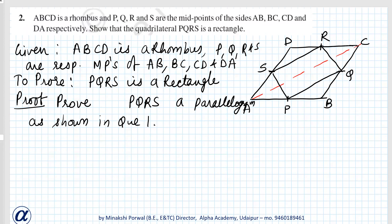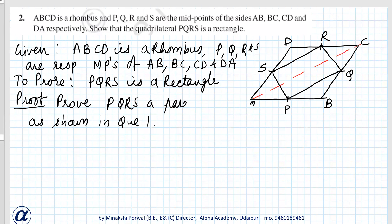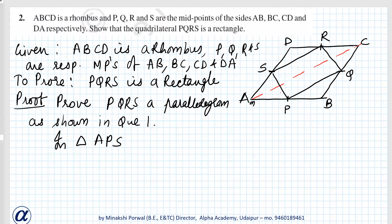A parallelogram is a rectangle if one angle is 90 degrees. So we will proceed this way. Now, in triangle APS, we will name the angles: angle 1, angle 2, angle 3, and angle 4.